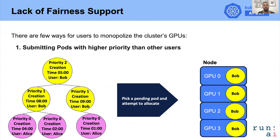As you can see in this example, Bob submits pods with higher priority than Alice, so his pods will be at the top of the heap and therefore will be scheduled first. Eventually Bob can monopolize and use all the GPUs in the cluster.